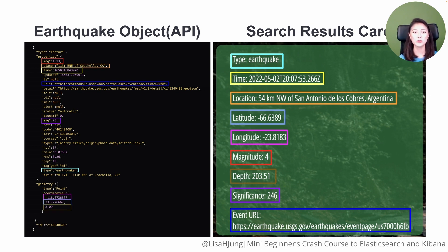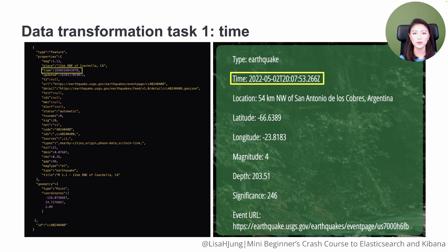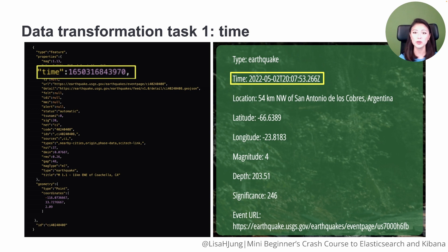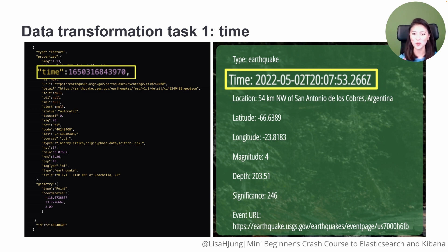When you compare the two, for the majority of these, the info from the API is identical to the info displayed in the search results. However, there are a few that are not the same. For example, the field time in the API earthquake object is in Unix epoch time, but time on the results card displays a human readable timestamp. To achieve this outcome, we'll convert the Unix epoch time into a human readable timestamp, then store the transformed information in the field timestamp in Elasticsearch. This will become more clear in the next episode.